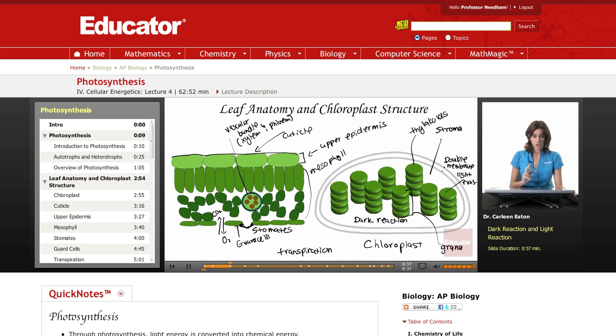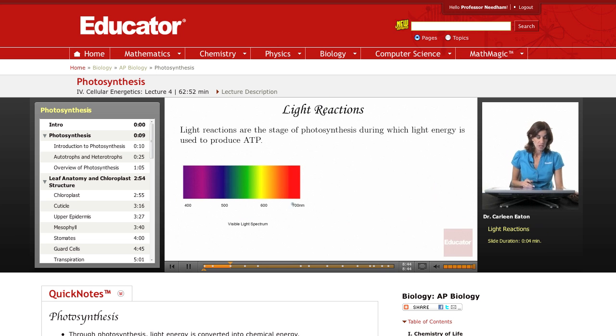Alright, so two parts to photosynthesis, light reactions and dark reactions. We're going to focus first on the light reactions, or the light-dependent reactions. This is a stage of photosynthesis during which light energy is used to produce ATP. ATP is needed for the dark reactions, and that's when glucose is produced. So light reactions produce the ATP. The ATP is then used in the dark reactions to actually form glucose.